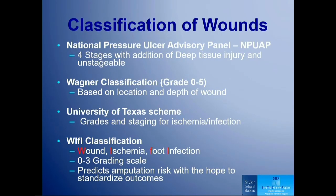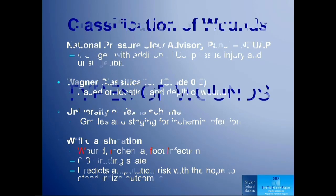Various classifications include the National Pressure Ulcer Advisory, the Wagner classification which is most widely used in most hospital systems, the University of Texas scheme which has been adopted for the diabetic foot, and more commonly now the Wi-Fi classification — a broader classification currently being used in our institution and many institutions with limb salvage programs. It focuses on the wound, the ischemic component, and foot infection. It's a zero-to-three grading scale, and that number helps predict amputation risk with the hope to standardize outcomes. The SVS has published great validating articles, and our center is also working to validate this classification scheme.